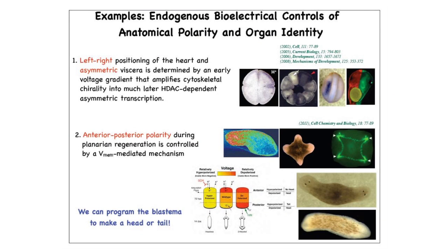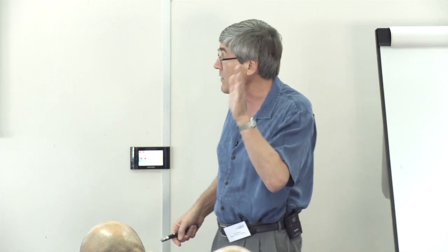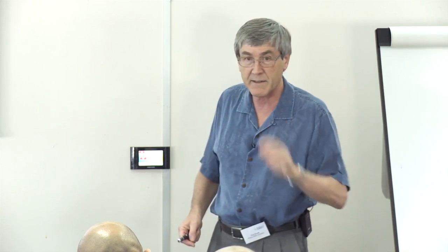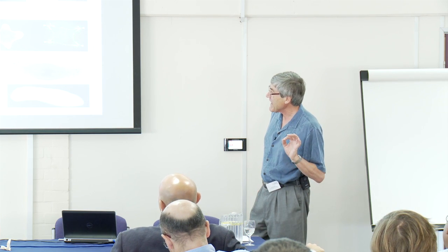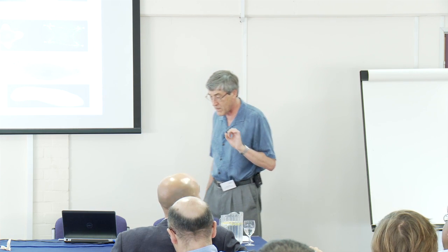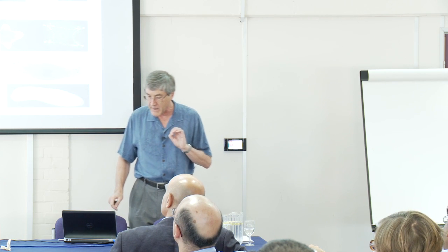Here are a couple of examples Levin provided. One is left-right symmetry breaking — for example, the position of the heart — where mapping electric fields in an early-stage embryo shows they are part of the story. Another example I particularly like is planaria — little worms you can chop up and they regenerate. There are electric fields around the wound, and by manipulating those fields you can make them grow two heads or two tails. So clearly at the level of regeneration and embryo development, these electric fields are important.